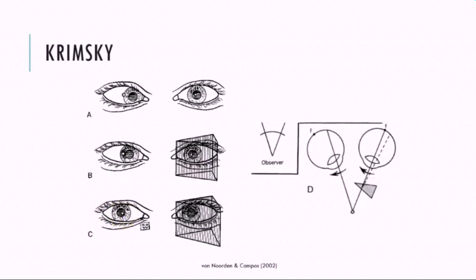One of the advantages of the modified Krimsky is that we allow ourselves to have a clear view of the deviating eye. In the previous example, we had the prism in front of the deviating eye, so in order to assess the corneal reflection, you've got to look through the prism, which can be distorting. In this instance, where we've put it in front of the fixing eye, the deviating eye is in clear view and therefore it's a little bit easier to perform. I always perform it in front of the fixing eye.